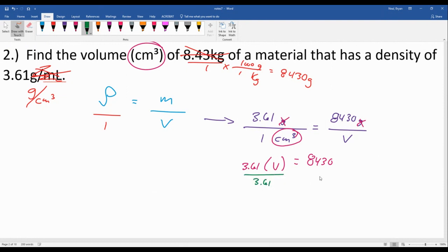Then to get V by itself, we want to get rid of that number in front. So multiplication, now we'll do division to get rid of it. And overall, 2335.18 cubic centimeters is your answer.